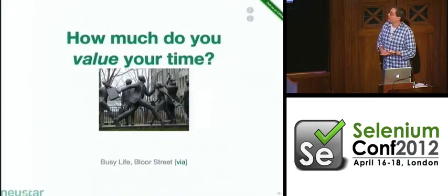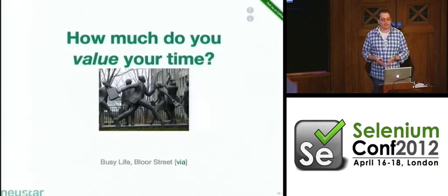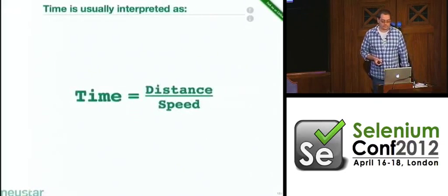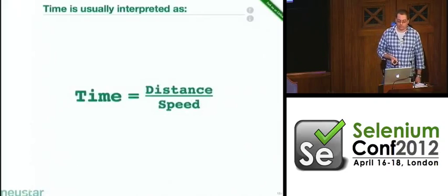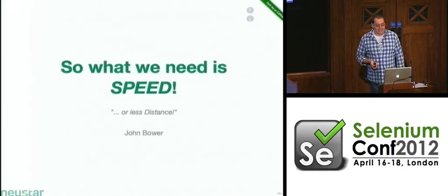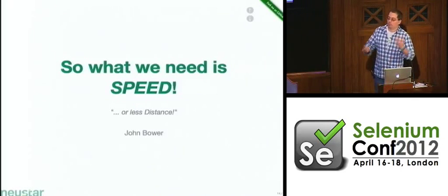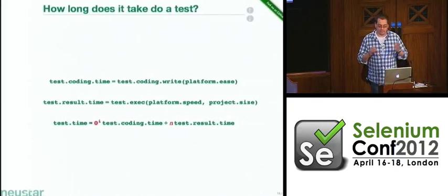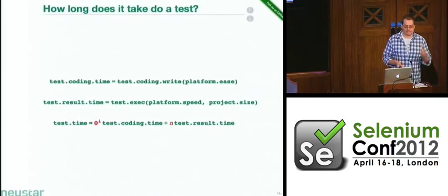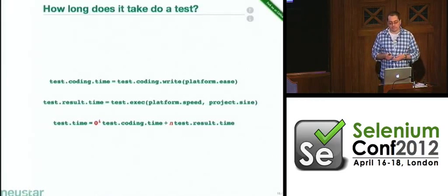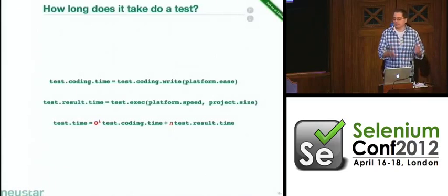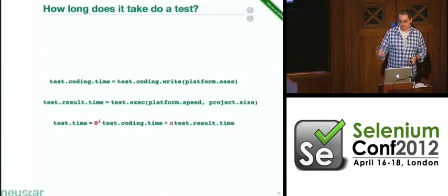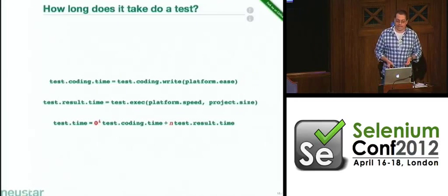I want to ask a simple question: how much do you value your time as developers or testers? It's a simple equation — time correlates with distance and speed. What we really need is to increase our speed. So in a non-mathematically-correct way, how long does it take to test? It's a combination of two things: the time it takes to write a test, which is a function of how easy the platform is to use, and most importantly how long it takes to run the test — because you're not going to run it once, you're going to run it all the time.